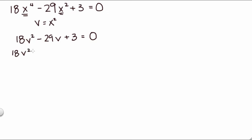So it is 18v squared minus 2v plus 27v plus 3 equals 0.